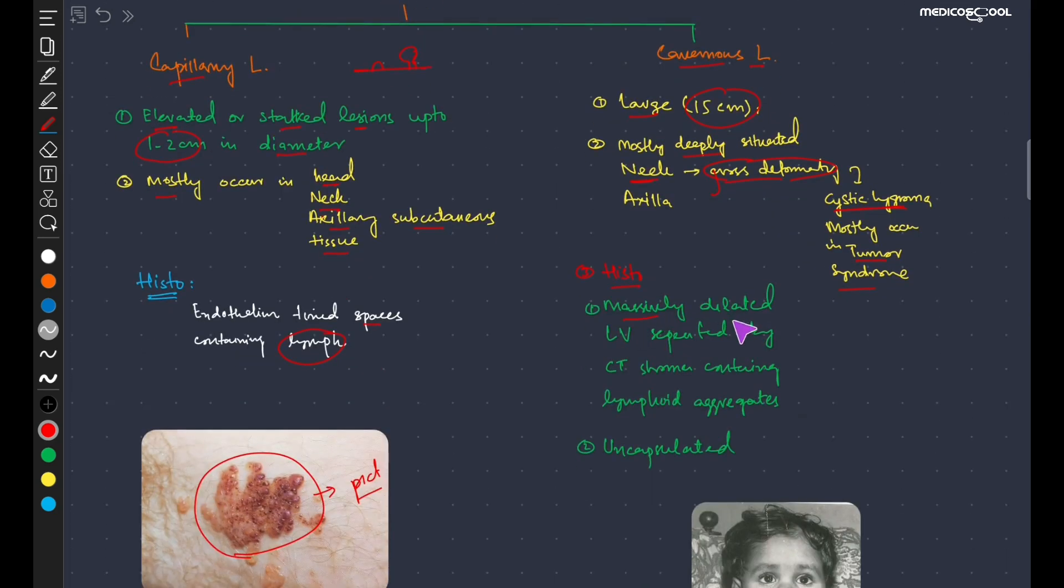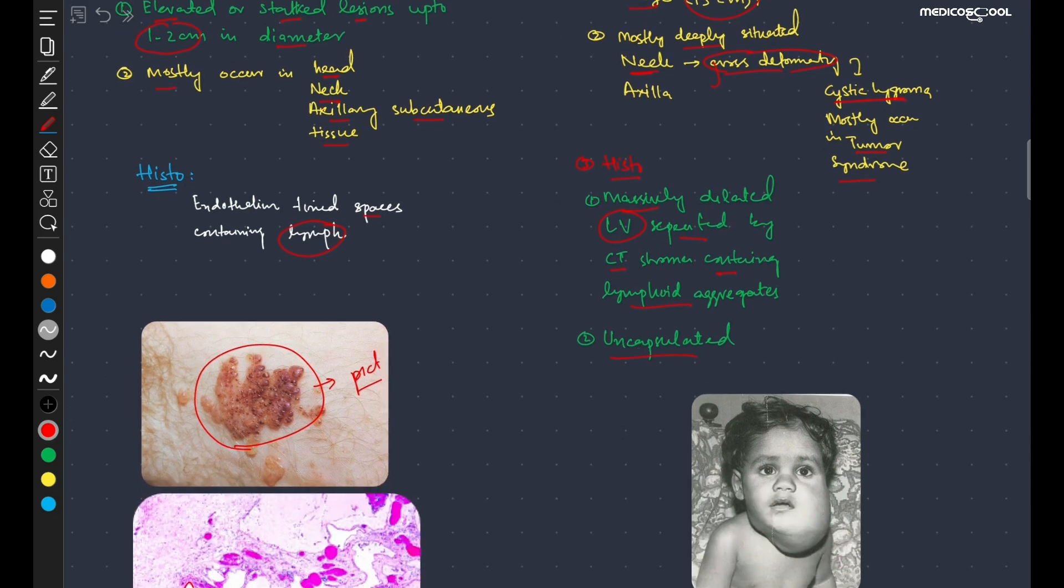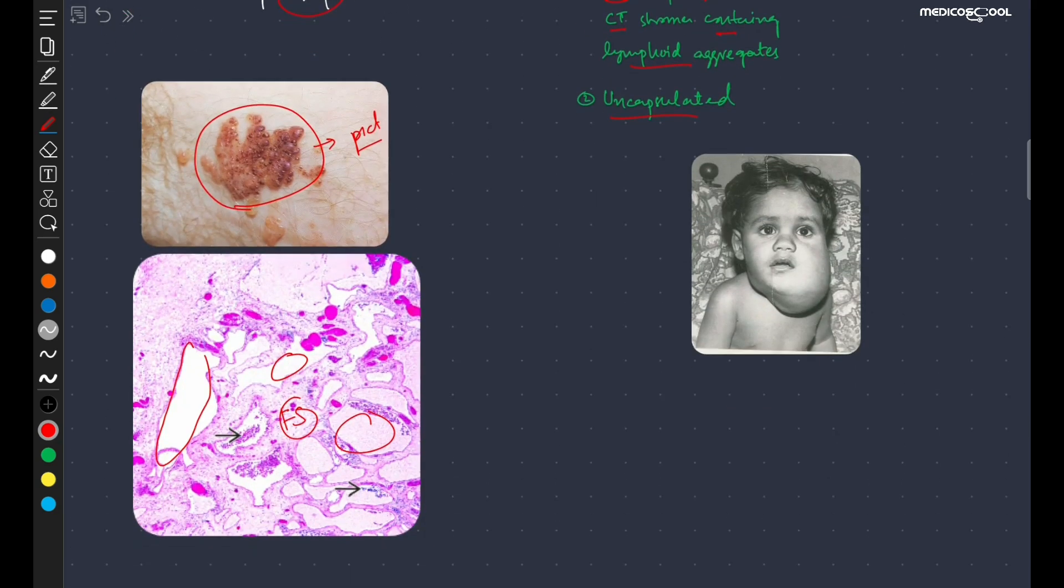Massively dilated lymphatic vessels separated by connective tissue stroma containing lymphoid aggregates. They are mostly uncapsulated. Here is the picture of cystic hygroma present in the neck.